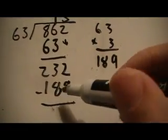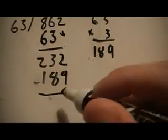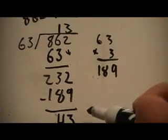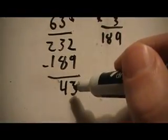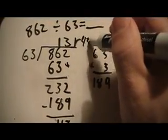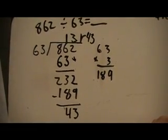I would count up. So, 89 plus 1 gets me to 190 plus 42, so that's going to be 43. 43 is less than 63, so there is my remainder. So, I've got 13 remainder 43. So, that would be using the standard algorithm for division.